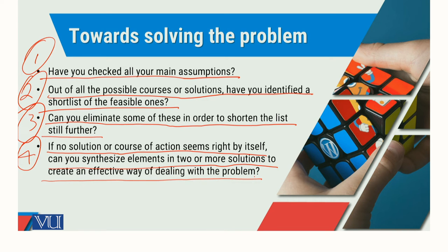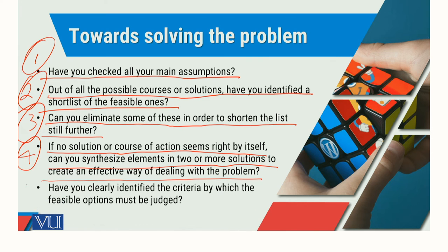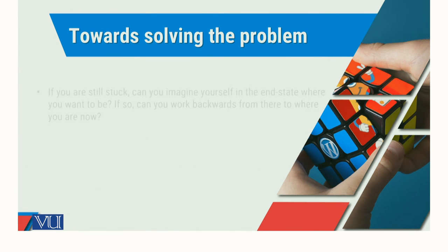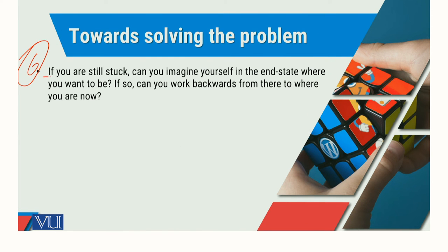This sequence is our whole approach: identify the problem, see the courses of solutions, evaluate them, and slowly move towards the final decision which will be implemented. The fifth point: have you clearly identified the criteria by which feasible options must be judged? The sixth point: if you are still stuck, can you imagine yourself in the end state where you want to be — and can you work backwards from there to where you are now? This reverse engineering can help us reach better decision making.